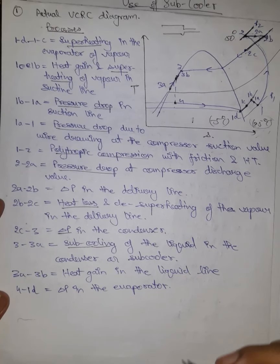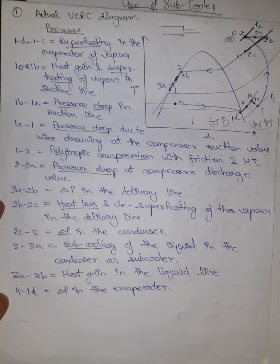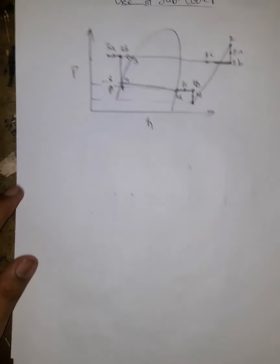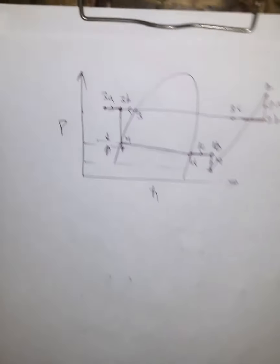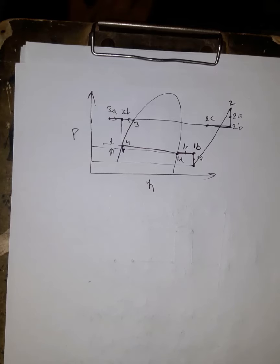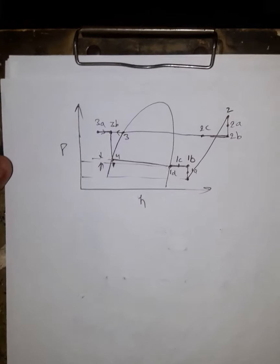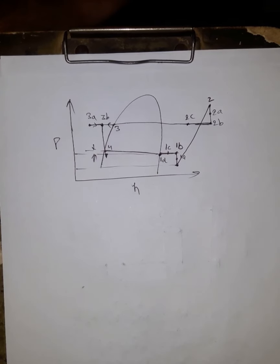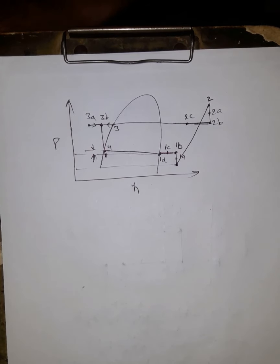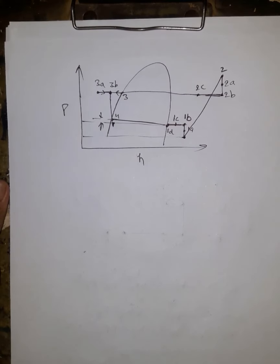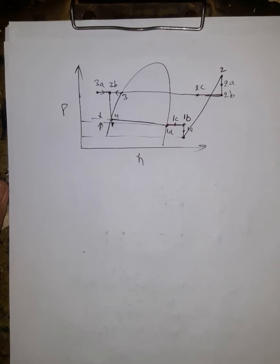All the pressure changes and heat losses occurring in the actual BCRC cycle have now been represented on a single diagram. You can take a screenshot of both the TS and PH diagrams for reference. In the next video, we will discuss the pressure drop in the evaporator and condenser, and how they affect the size of the condenser and evaporator — an important topic to be covered.